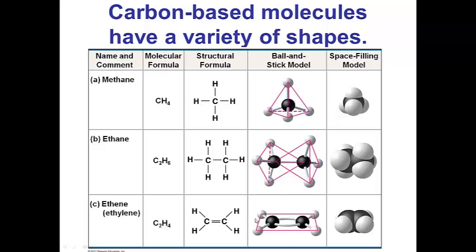In contrast to ethane, ethene has a planar structure. So these variety of shapes allow carbon molecules to accomplish all kinds of cellular functions.